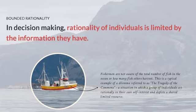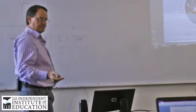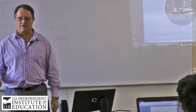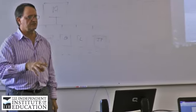In decision making, rationality of individuals is limited by the information that we have. And what they show us there is that that little boat fishermen are not aware of the total number of fish in the ocean, or how many fish others harvest. This is a typical example of a dilemma referred to as the strategy of commons, a situation in which a group of individuals act rationally in their own self-interest, and deplete a shared, limited resource. Now, this thing is in the news all the time. In fact, there was a piece on fisheries last night on Carte Blanche, not on the same issue, on a different issue.